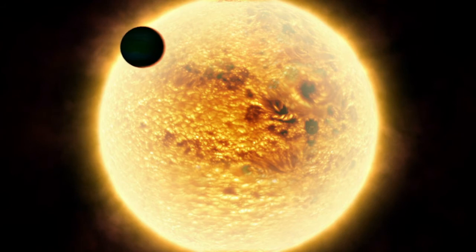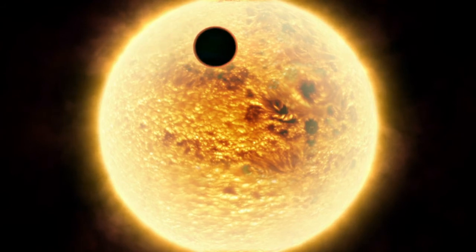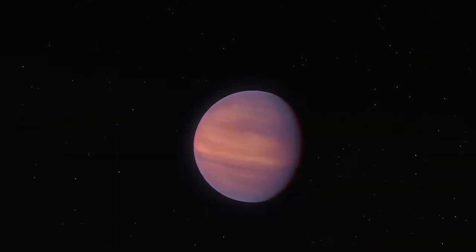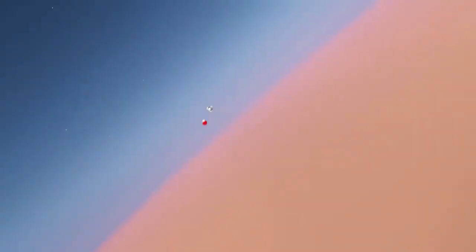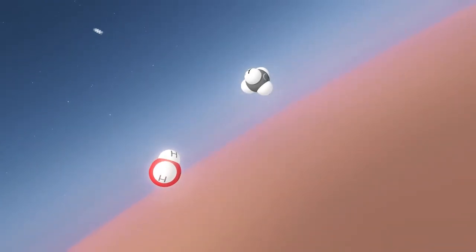The exoplanets are studied as they pass in front of their host star, as seen from Earth, when chemicals in their atmosphere leave their telltale signature in the spectra by filtering out certain wavelengths of starlight.